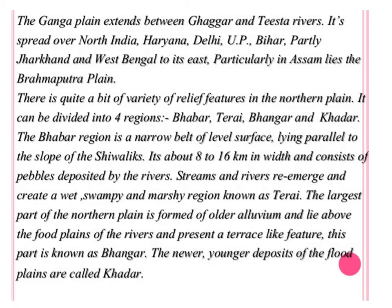The second river system making the North Plain is the Ganga river system, which forms the Ganga Plain. The Ganga Plain mainly covers Haryana, Delhi, Uttar Pradesh, Bihar, and some parts of Jharkhand and West Bengal. The Ganga river has many tributaries, such as Chambal, Yamuna, and Betwa. Yamuna is the largest right-bank tributary of the Ganga river.